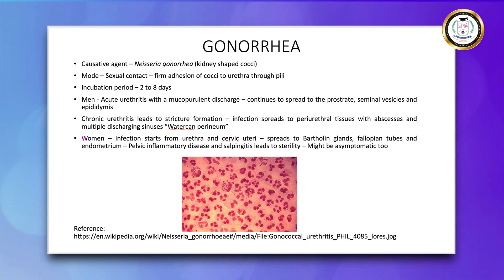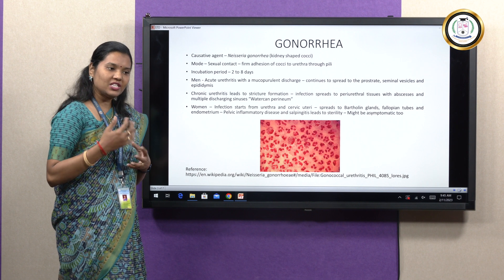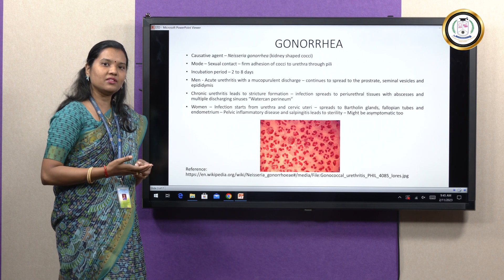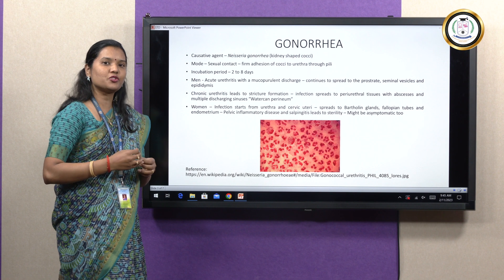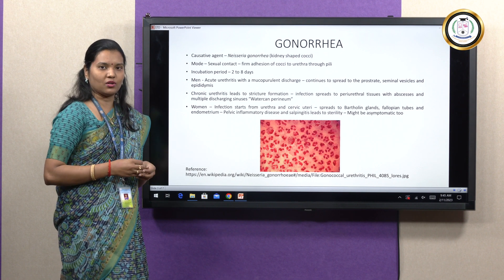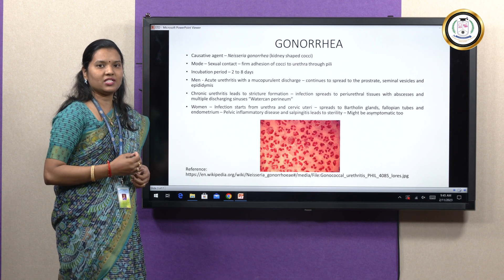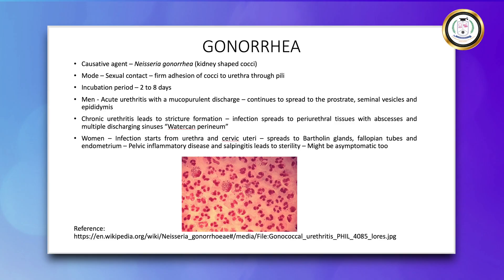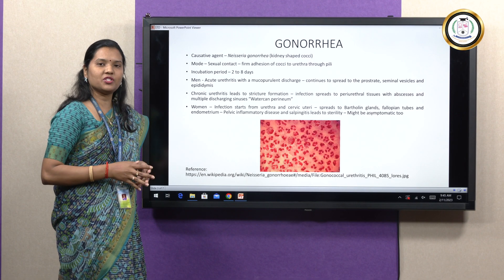In women, the bacteria are confined to the urethra and cervix uteri. The cervix uteri is a region that connects the urethra and the vagina. The vagina is generally spared because the squamous epithelial cells of the vagina resist the cocci, and the acidic pH of the vagina destroys the cocci. In prepubertal girls, vulvovaginitis is a common symptom. In adult women, pelvic inflammatory disease and salpingitis — infection of the fallopian tubes — are very common and both lead to sterility.